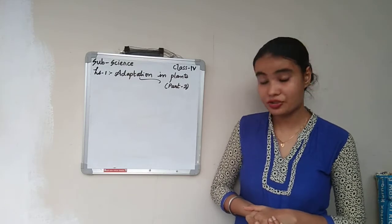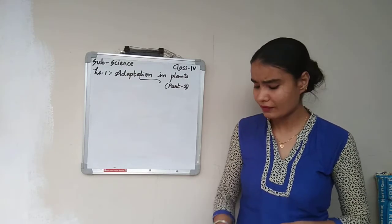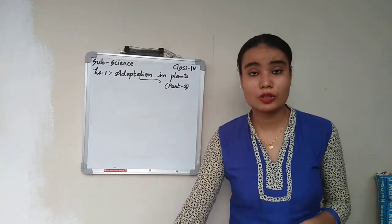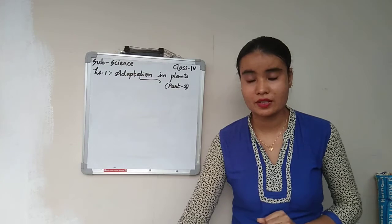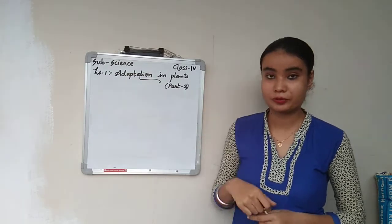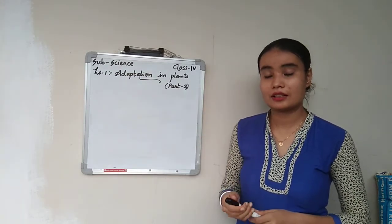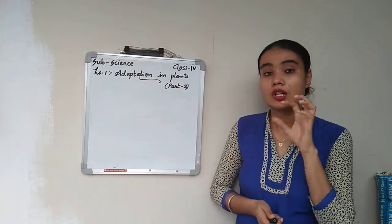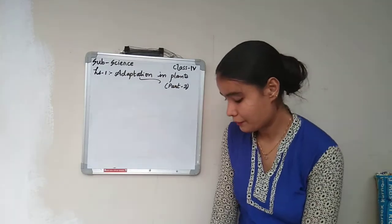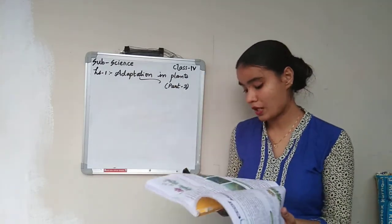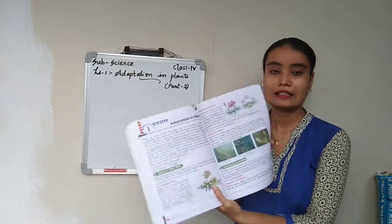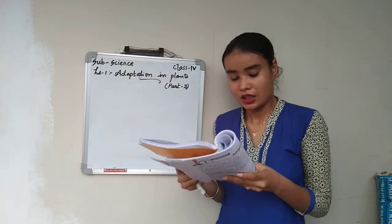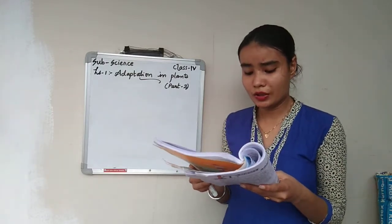Today in Part 2 we will learn about terrestrial or land plants. As the name says, terrestrial or land plants are plants which grow on the land. Let us begin — everyone take out page number 99. Terrestrial or land plants: let us begin.